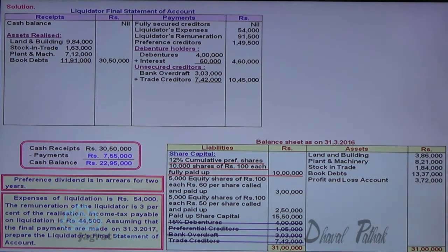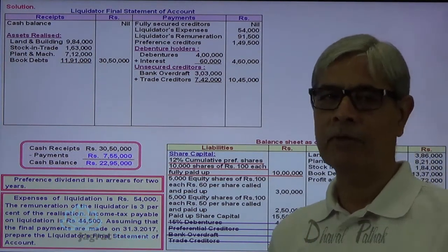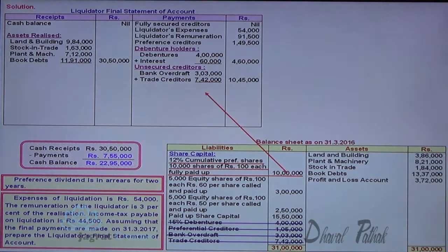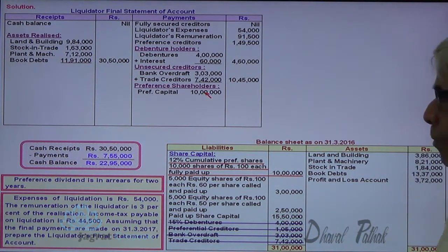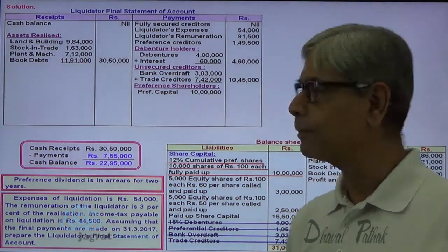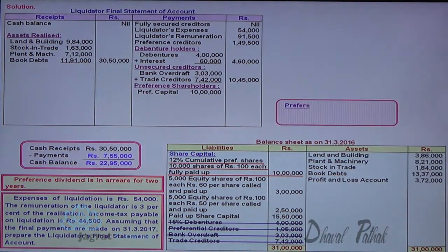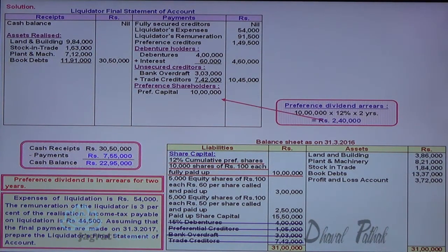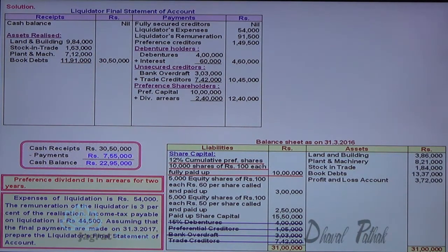Preference shareholders are to be paid 10 lakhs capital. The preference share dividend is in arrears for 2 years, so 2 years' dividend is paid to them: 10 lakhs into 12% for 2 years = 2 lakh 40,000. This is the total payment made to preference shareholders. After making payment to preference shareholders, I am required to distribute the remaining balance to the equity shareholders.